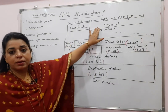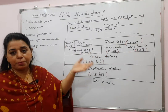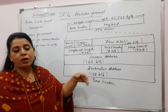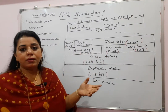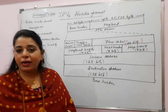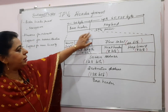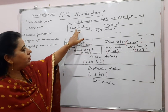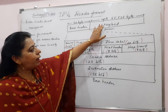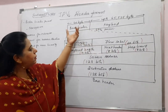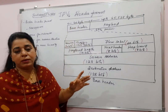IPv6 packet format consists of, like any other protocol — even if you take the IPv4 packet — basically two different parts: the payload and the header part. Similarly here for IPv6, you have the base header and the payload. This base header consists of 40 bytes.